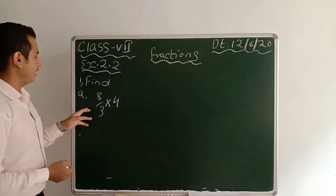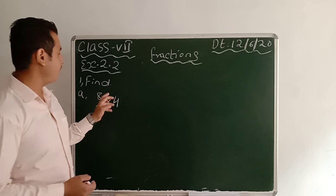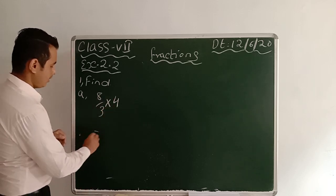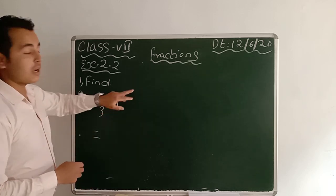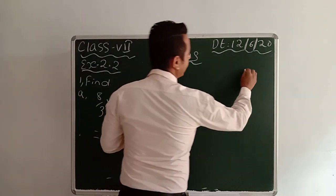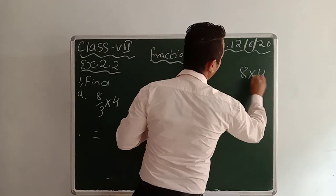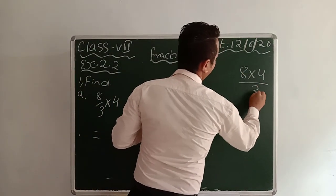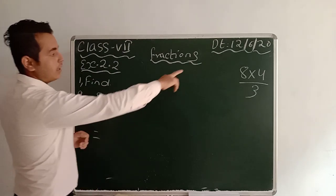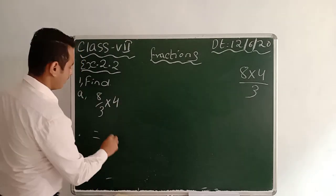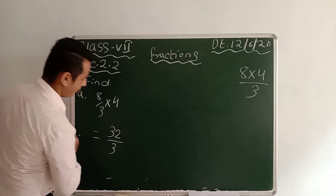Find the first question: 8/3 into 4. First of all, this 8 and 4 are in the numerator. So you can write 8 into 4 by 3, which gives you 32 by 3.